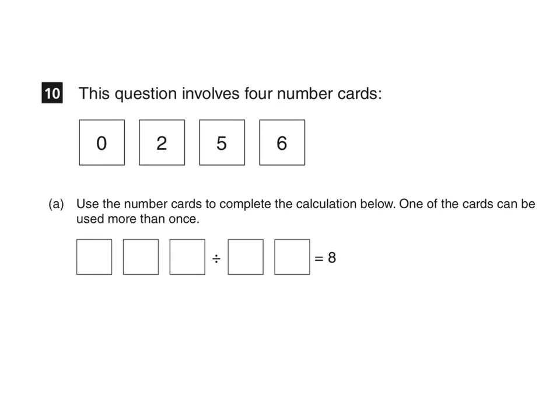This will help us to find the answer because we can make all the possible permutations of two-digit numbers from these number cards and then multiply each one by 8 to see which one results in an answer we could make using the number cards we're given, remembering that one of the cards can be used more than once.